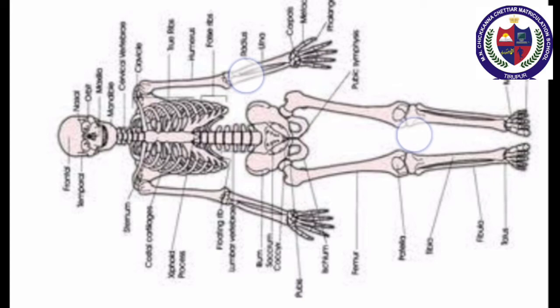Endoskeleton: it is a skeleton that is found inside the human body, and it originates from the mesoderm. These are found in almost all vertebrates and form the main body structure. Constituents of the skeleton: the human skeleton consists of bones, cartilages, and ligaments.